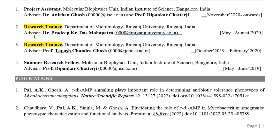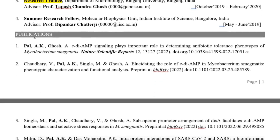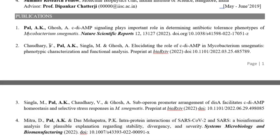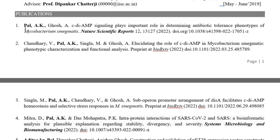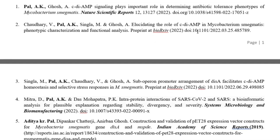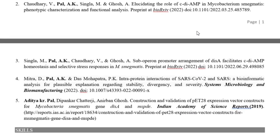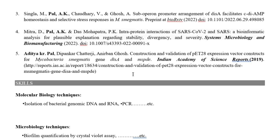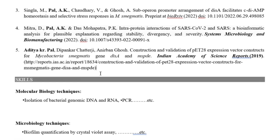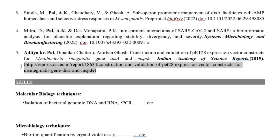The publications section is important to showcase if you have any. Keep the most recent publication at the top, and bold your name and the journal name. Include the DOI — the Document Object Identifier — as a hyperlink so recruiters can quickly access your paper. You can also include conference articles if they are publicly accessible online. If something is published in a news outlet or similar source without a DOI, just paste the direct link to the article.